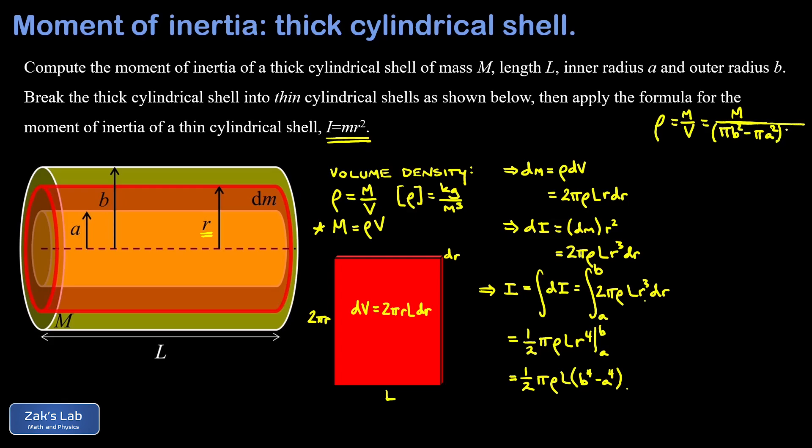We can make this substitution back in our formula for the moment of inertia. I get one-half π times rho, which is M over π times the quantity b² minus a² times L, then L was the next factor in our moment of inertia, then b⁴ minus a⁴. A couple things cancel here: we lose a factor of π and a factor of L cancels as well.